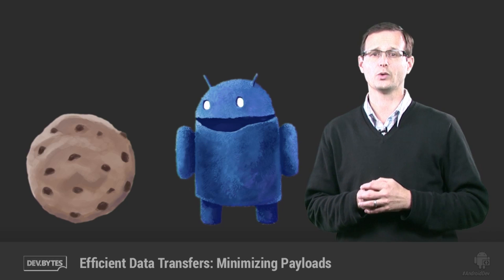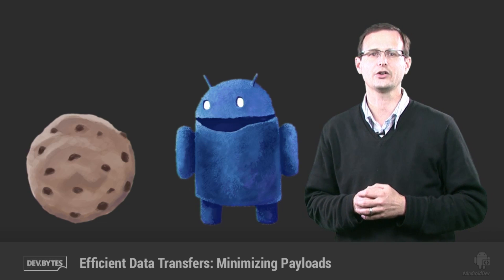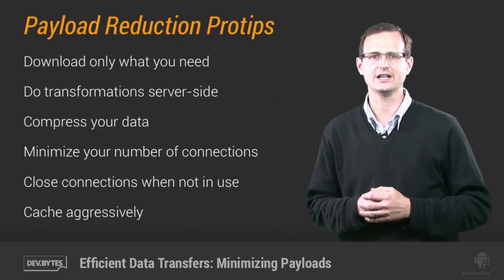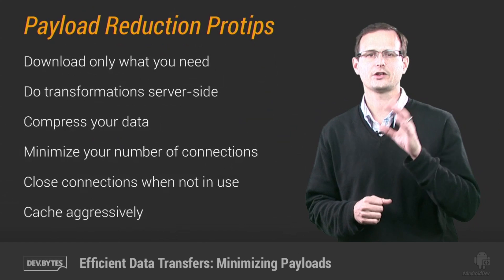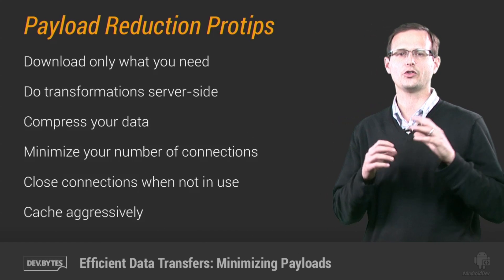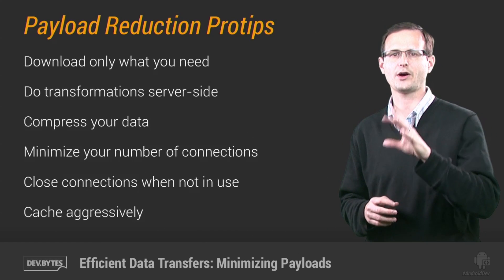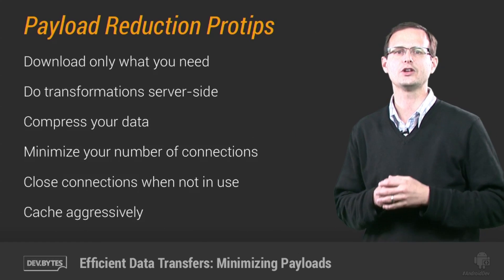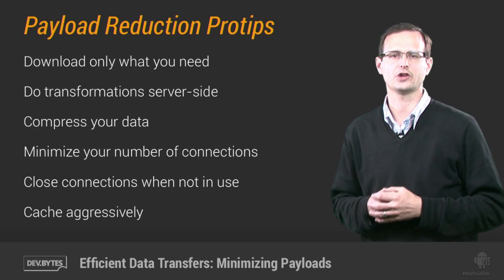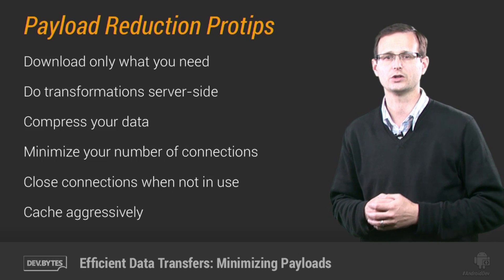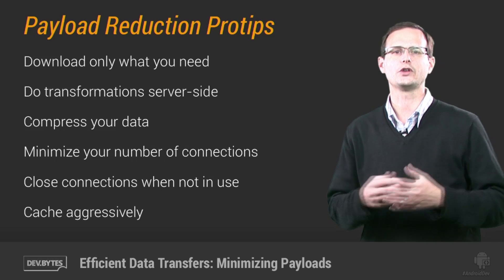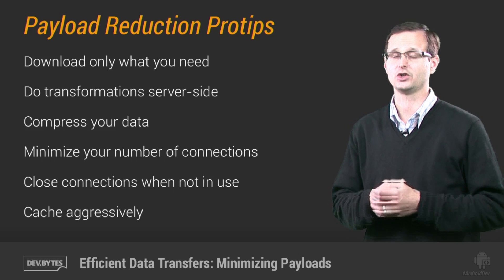The most fundamental way to reduce your downloads is to download only what you need. Start by using REST APIs that let you perform filtering on the server using parameters that allow you to indicate when your last update occurred or what the last items you received were. This ensures that you only end up downloading new stuff.